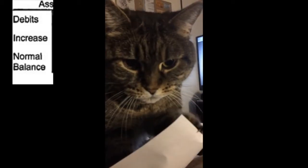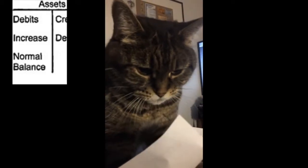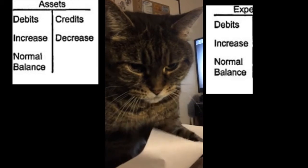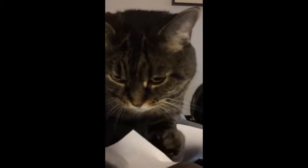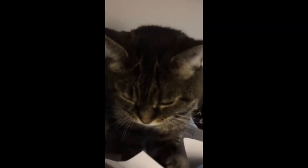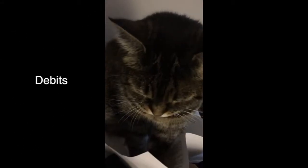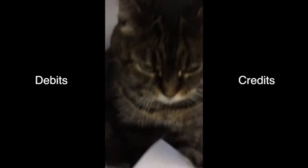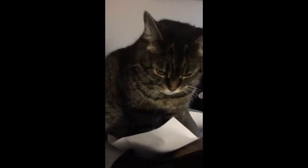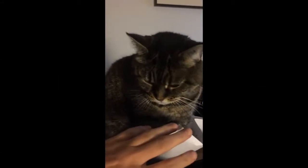Debits are left, credits are right. Debits are left, credits are right. What is that thing called? T-accounts. Debits are on the left side of the T-account and credits are on the right. I don't even know what that means.